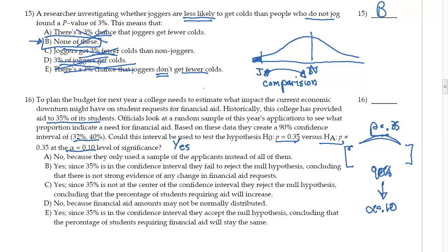And the 35%—the 35% is in this interval, which is what we would totally expect. So yes, 35% is in the confidence interval; they failed to reject the null hypothesis, concluding that there is strong evidence—not strong evidence of any change.